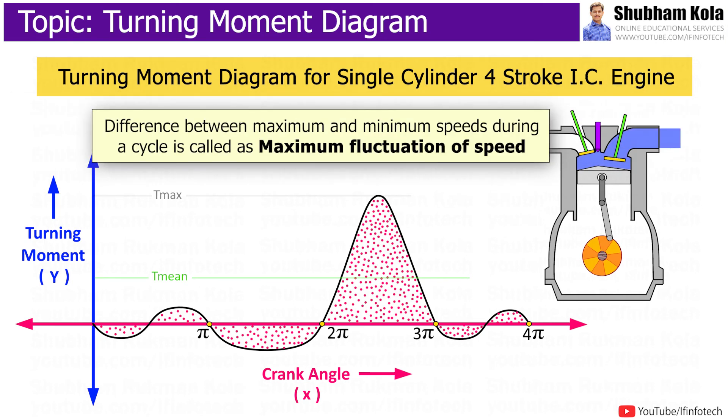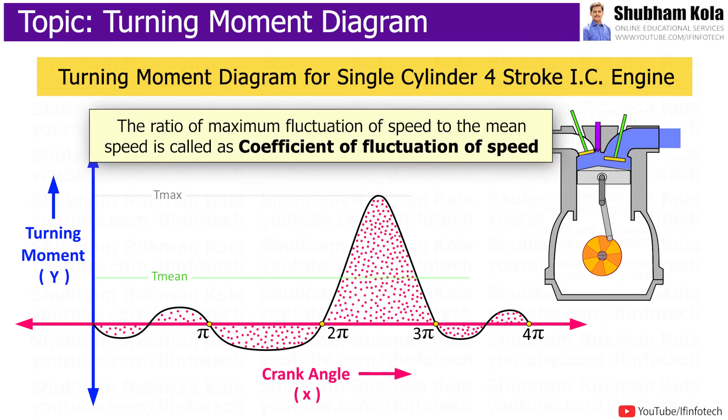The difference between maximum and minimum speed during a cycle is called as maximum fluctuation of speed. And the ratio of maximum fluctuation of speed to mean speed is called as coefficient of fluctuation of speed.